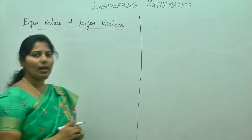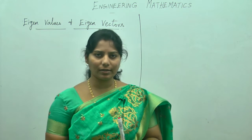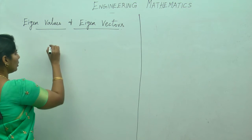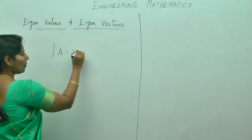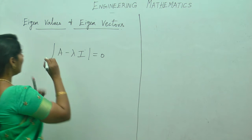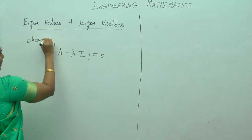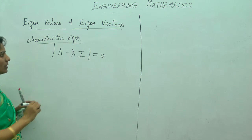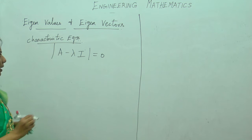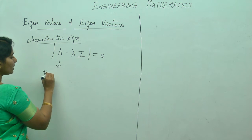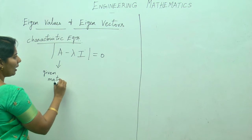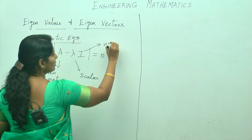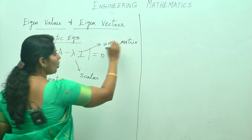To find the eigenvalues and eigenvectors, the first step is we need to find the characteristic equation. The characteristic equation is: determinant of A minus lambda I equals 0. That is, expanding the determinant of A minus lambda I and equating to 0, which will give you the characteristic equation. Here A is the given matrix, lambda is the scalar, and I is the unit matrix.